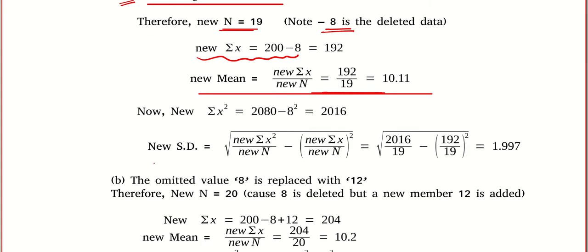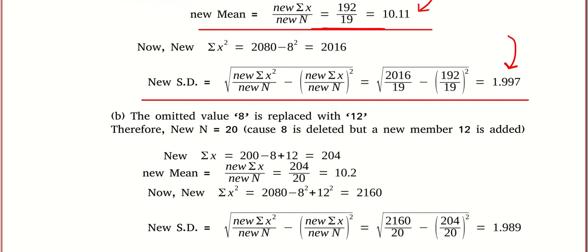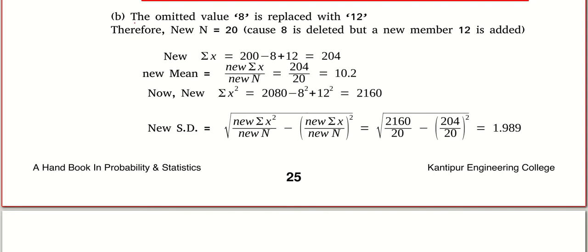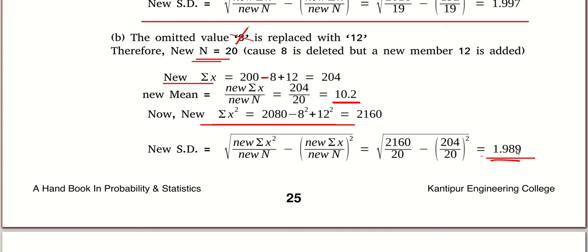We get the new arithmetic mean and new standard deviation for case (a). For case (b), the omitted value 8 is replaced with 12, so there is no change in the number of items — it remains 20. The new summation is the old sum minus 8 plus 12. In the sum of squares, we delete 8² and add 12², giving the new standard deviation. Confirm your answers in the comment section.